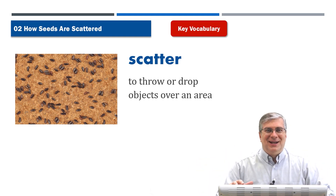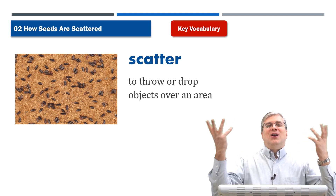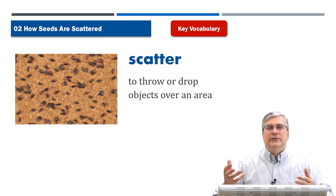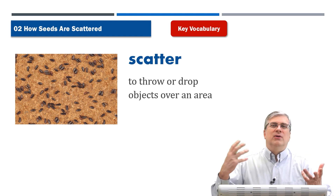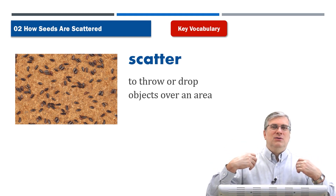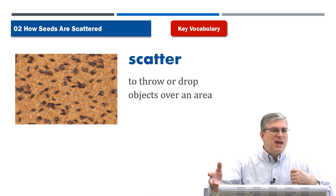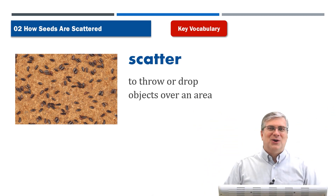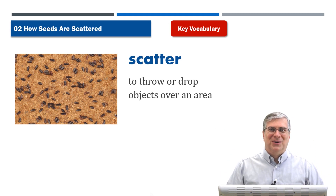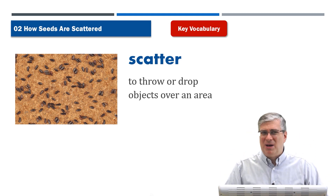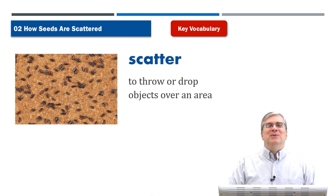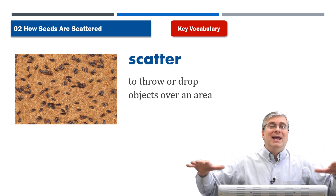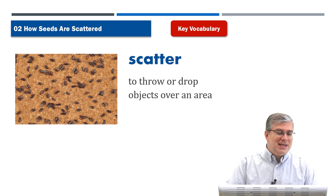Think about your room. If you come home and you take off your clothes, you change from your school clothes to your comfortable home clothes. You just throw your shirt over there, maybe your pants over there, your belt over there — you scatter your clothes all over the room. So to scatter is to throw objects or things in a wide area, not very neatly.